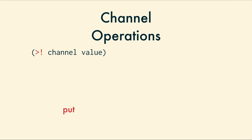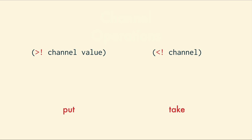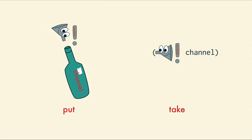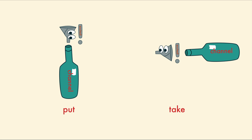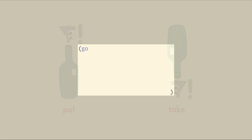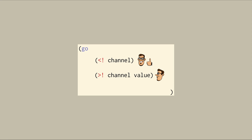The main operations on channels are put and take. It's easy to remember them — imagine that they are an excited funnel. The funnel points into the channel when you are putting stuff onto it, like a funnel into a bottle. It points out of the channel when you are taking stuff out of it. There's just one more thing: these funnel functions, put and take, have to be done inside of a go block.